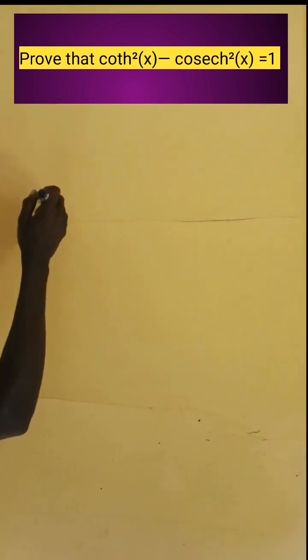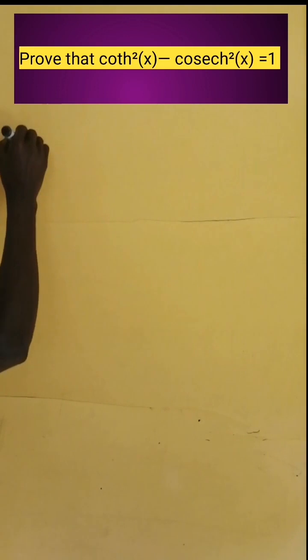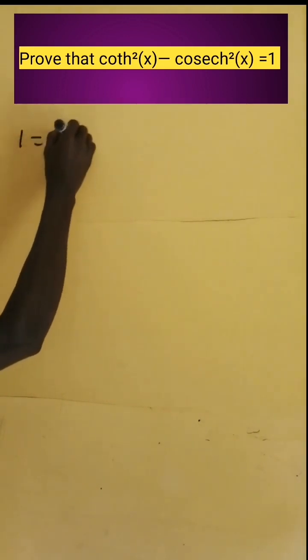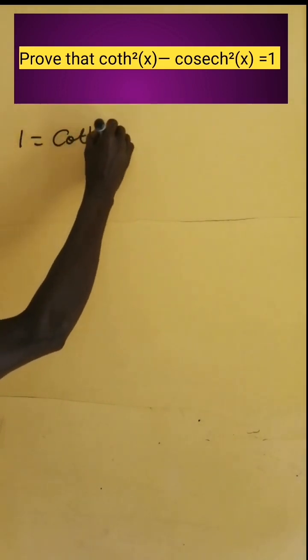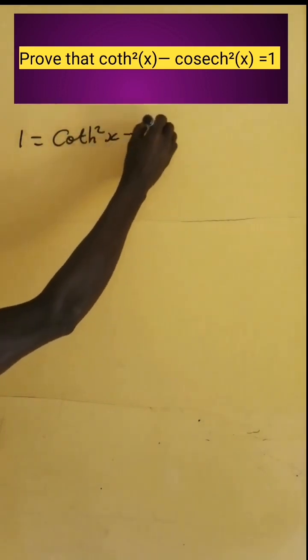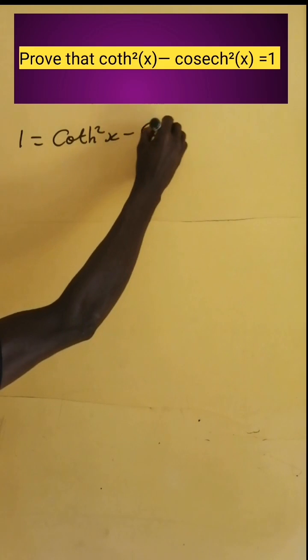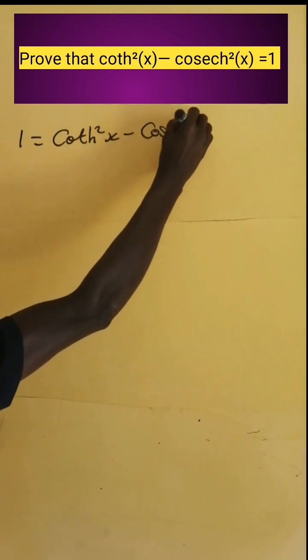Prove that 1 equals hyperbolic cotangent squared x minus hyperbolic cosecant squared of x. How do we do this?